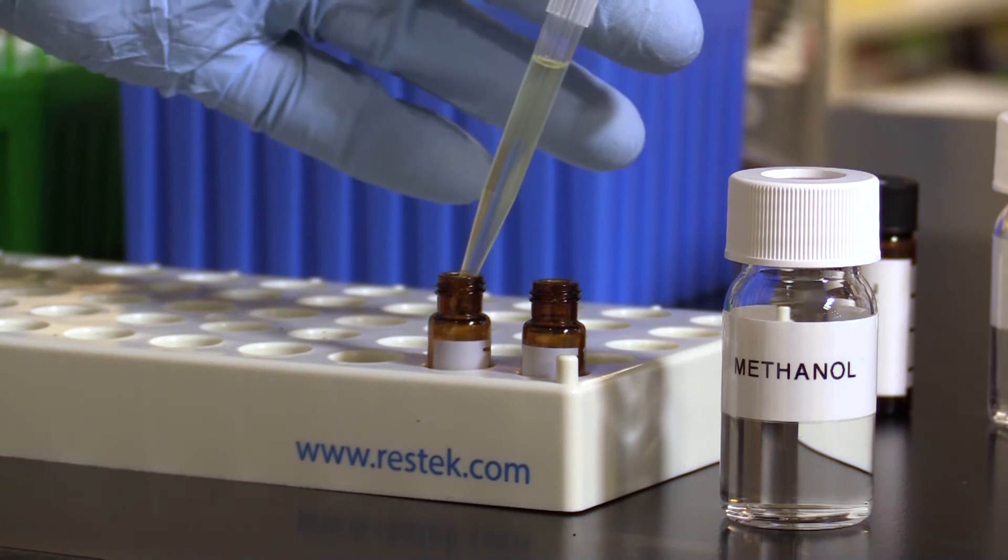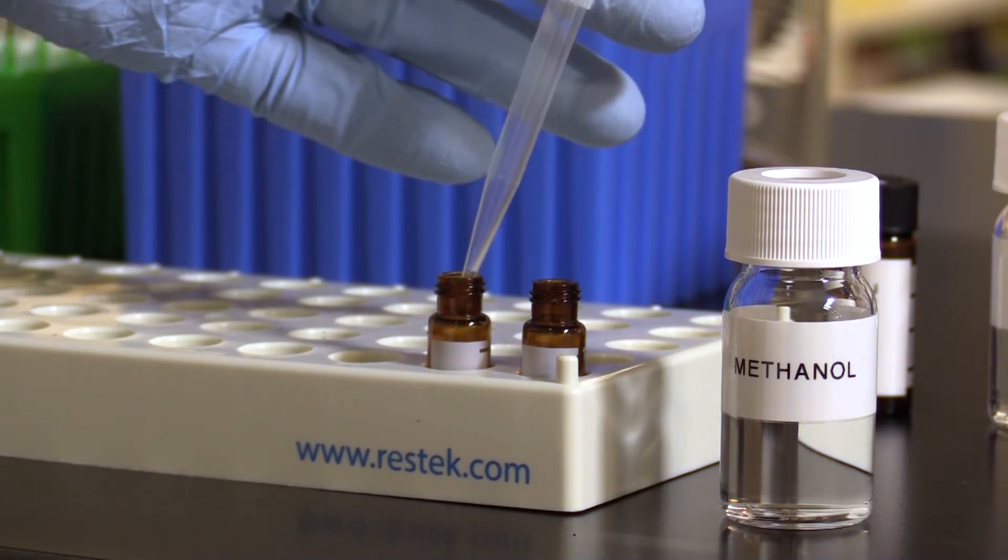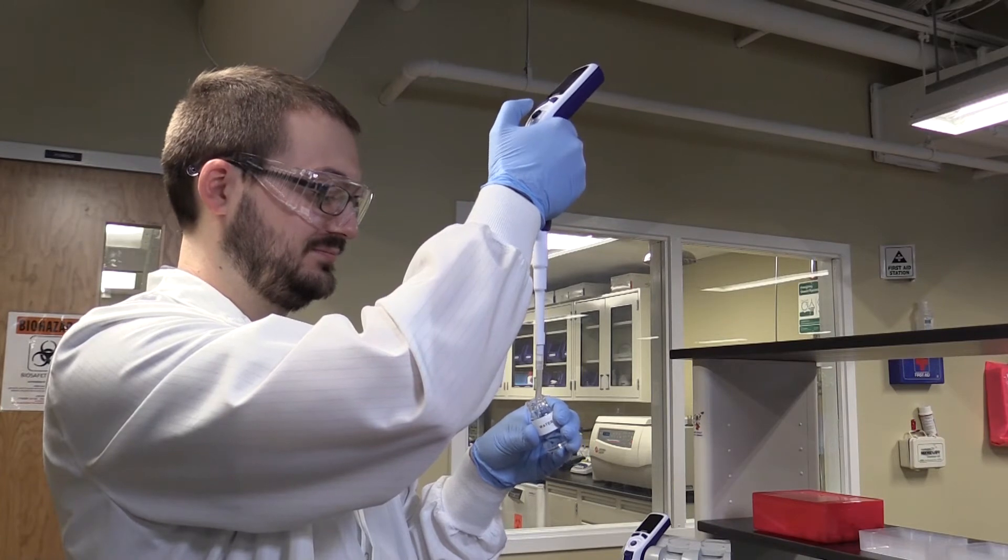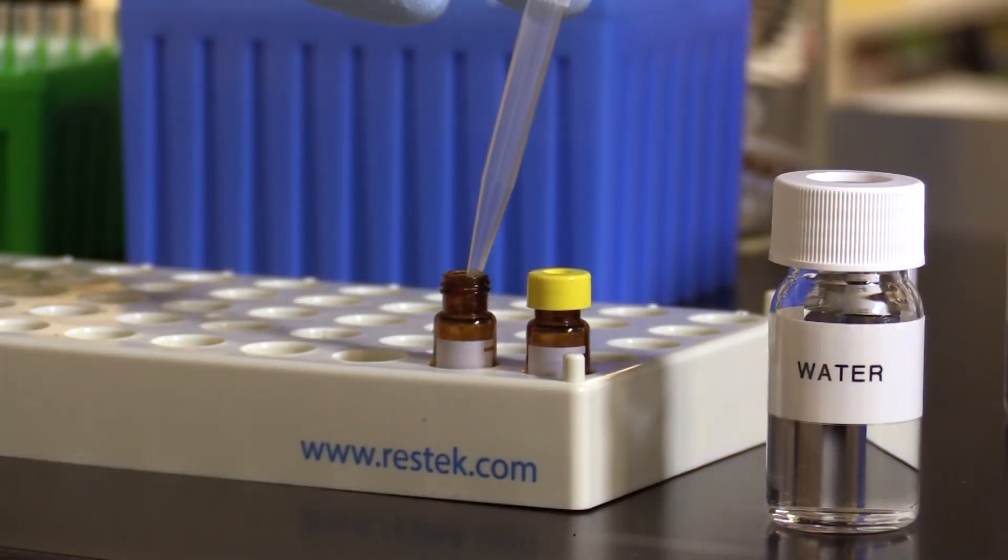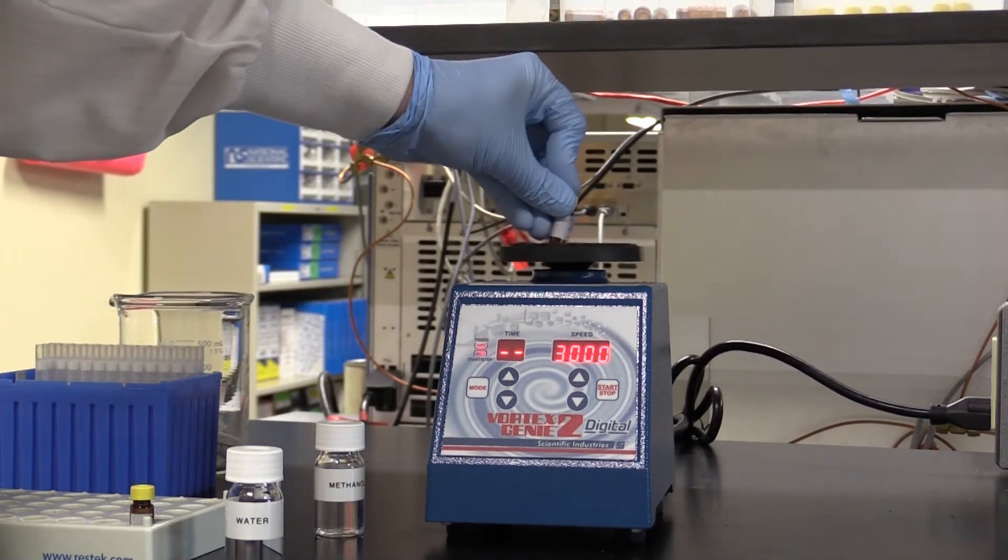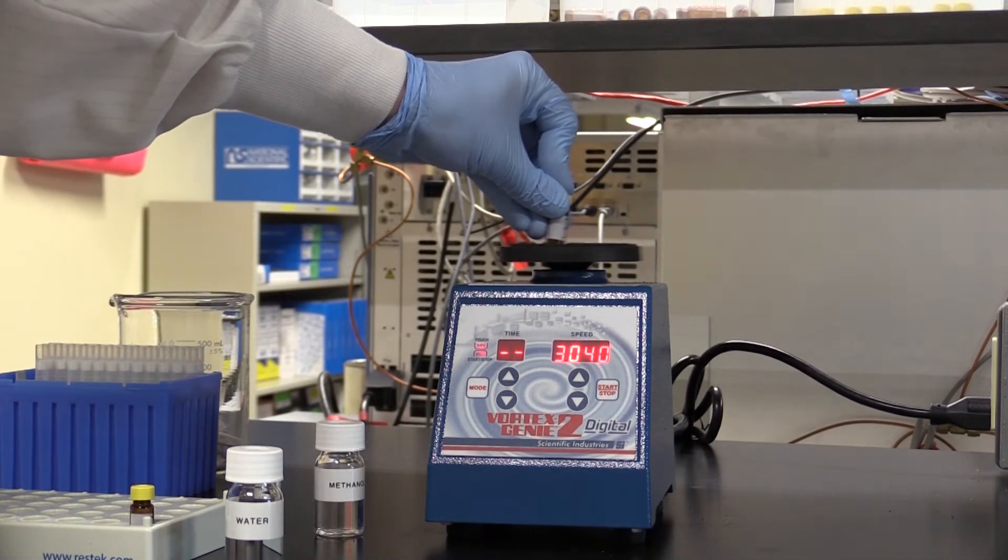Next, a 750 microliters sample solution is placed into a new amber vial. We then add 250 microliters of water into this in order to initiate matrix precipitation. Now vortex the new sample solution again, this time for 10 seconds at 3000 rpm.